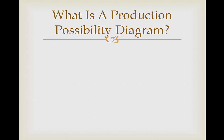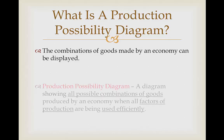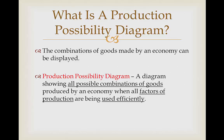What is a production possibility diagram? The combination of goods and services produced by an economy can be displayed on a production possibility diagram. The correct definition is: a diagram showing all possible combinations of goods produced by an economy when all factors of production are being used efficiently. This is also synonymous with a production possibility frontier or production possibility curve, so however you've been taught it, it's all the same.